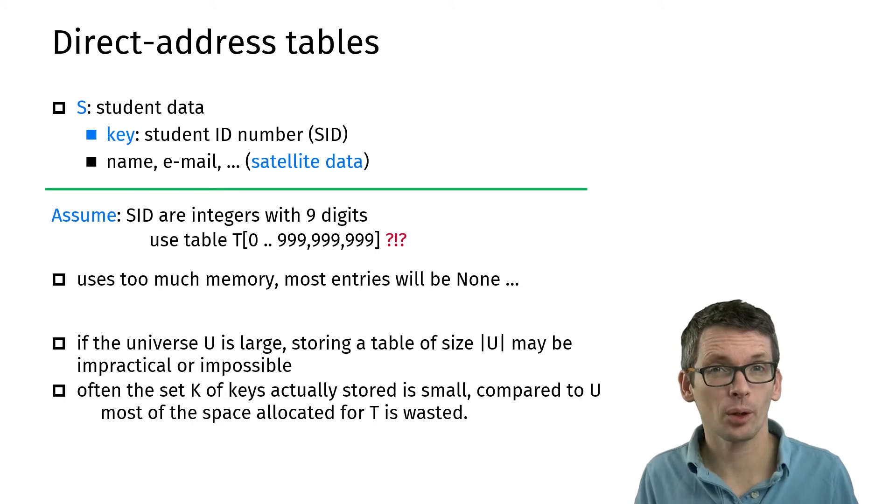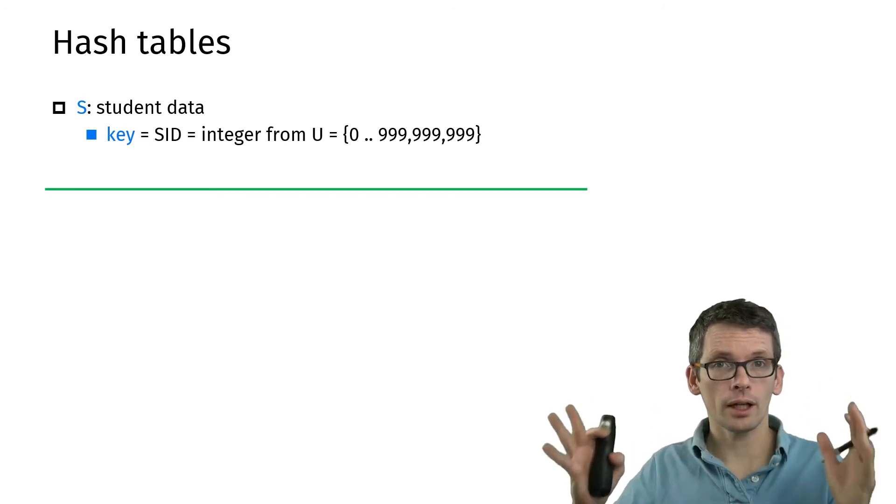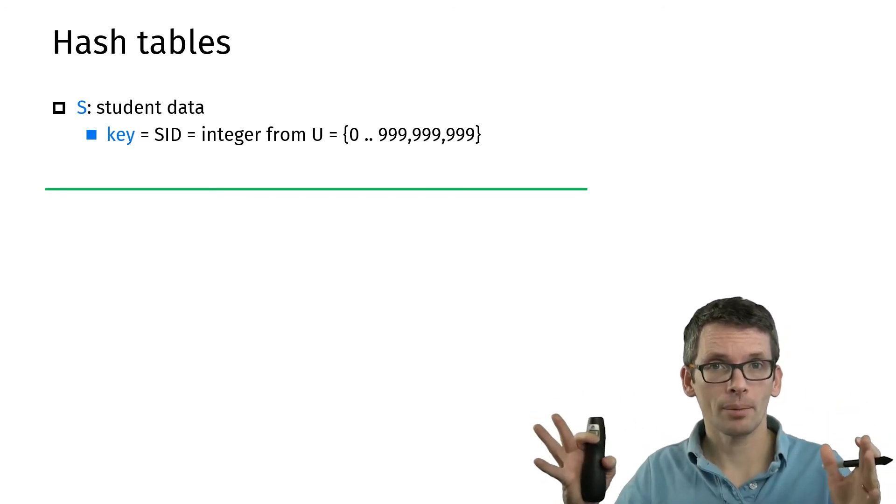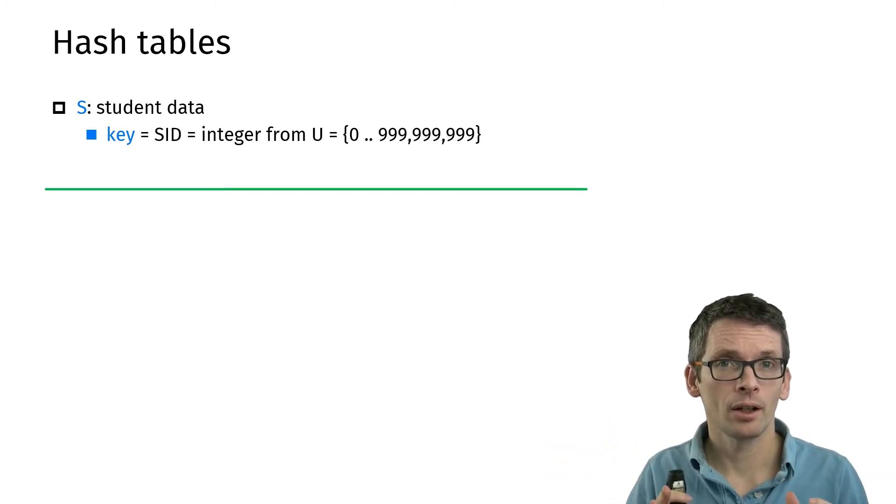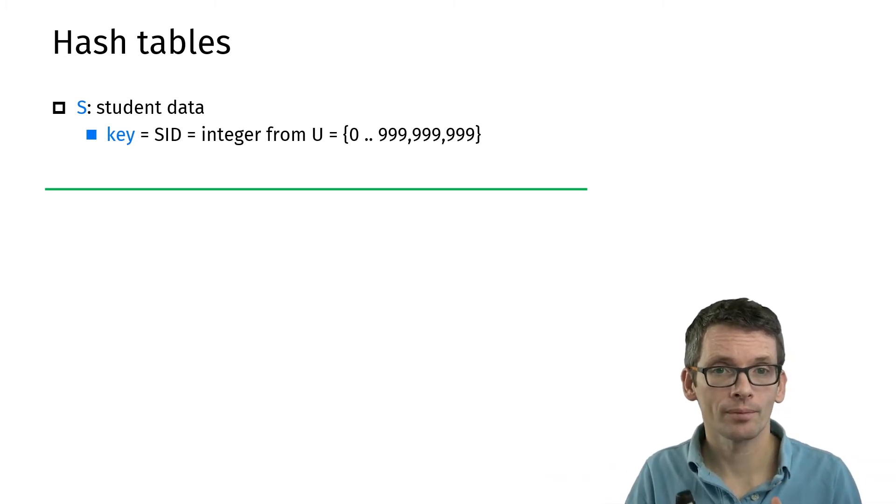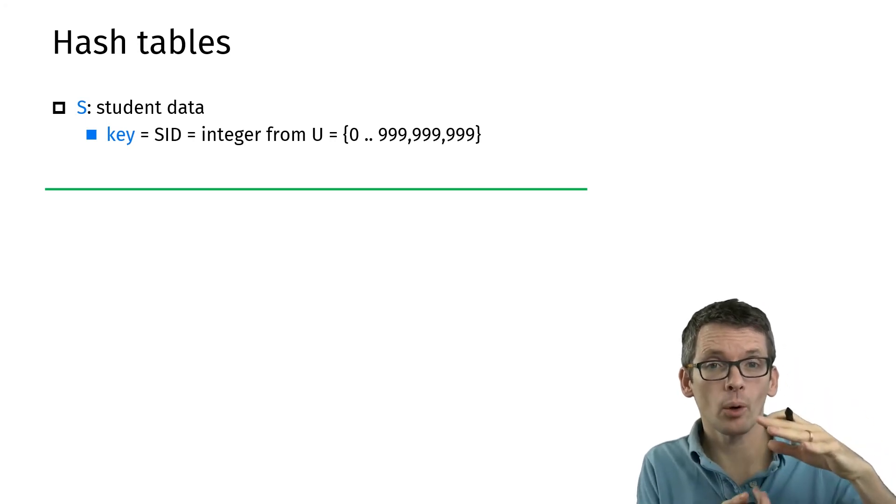So how do we solve this problem? The solution is hash tables. Imagine you have these student ID numbers, which might be nine digits, but you expect a much smaller set of students. The idea is then to also use a much smaller table. So let's say instead of nine digits, we use seven digits.